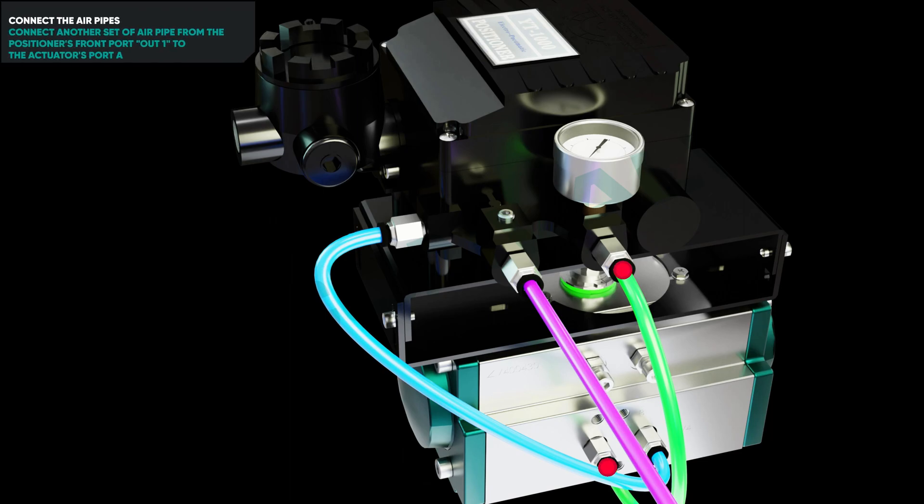Connect another set of air pipe from the positioner's front port, out one, to the actuator's port A.